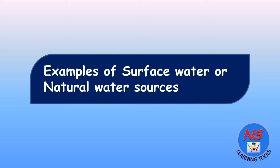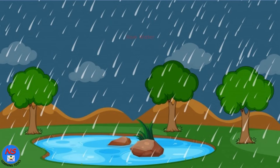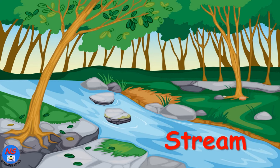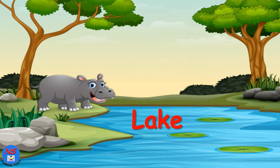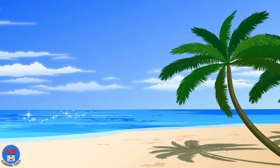Examples of surface water or natural water sources: river, rainwater, stream, lake, pond, sea.